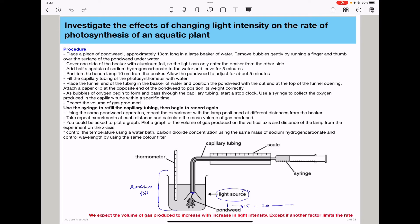In this experiment, you need to control the temperature. You can control using a water bath so that the pondweed is exposed to the same temperature throughout all the light intensity variations that will be carried out. You also need to control the carbon dioxide concentration used. We do this by using the same mass of sodium hydrogen carbonate for all the experiments when we vary the light intensity in order to make sure that they are exposed to the same carbon dioxide concentration.